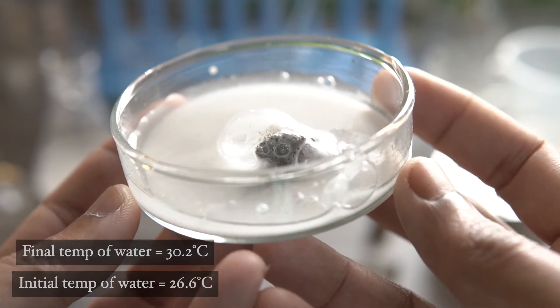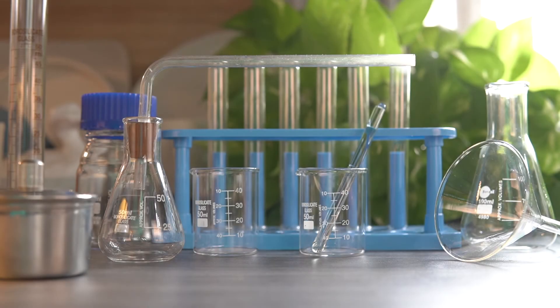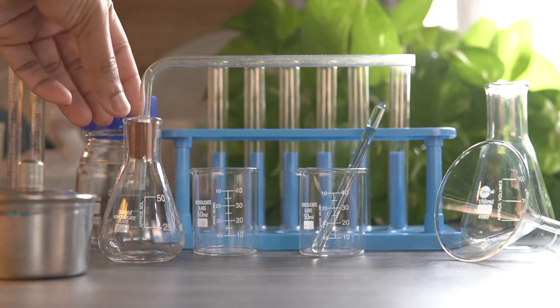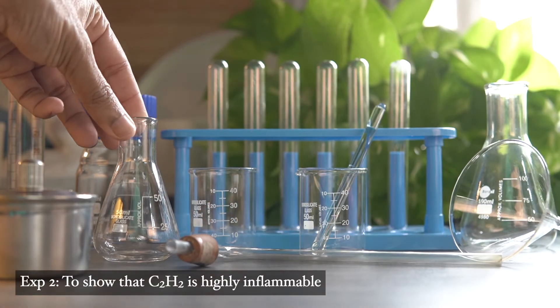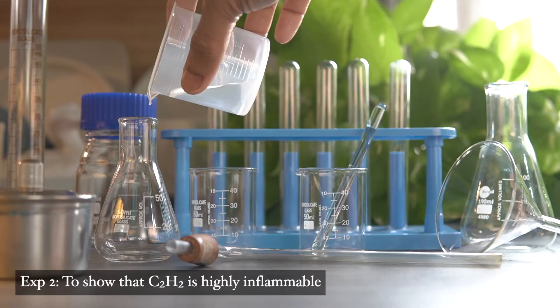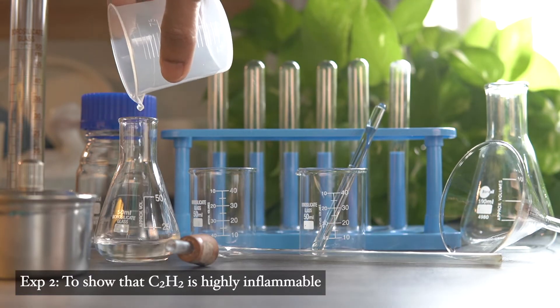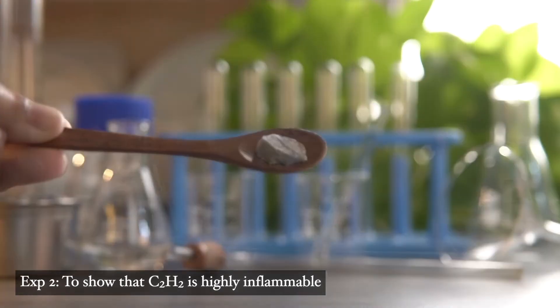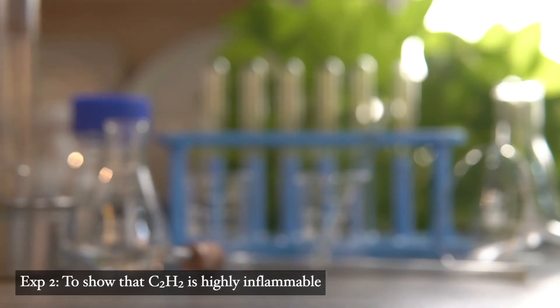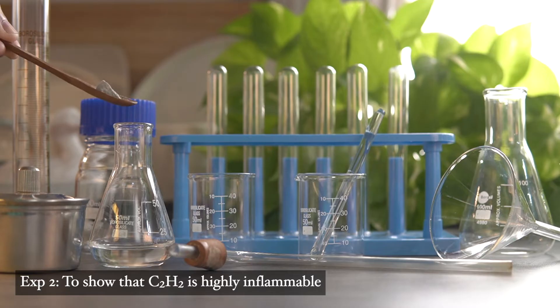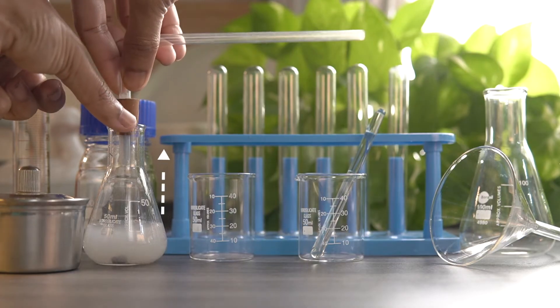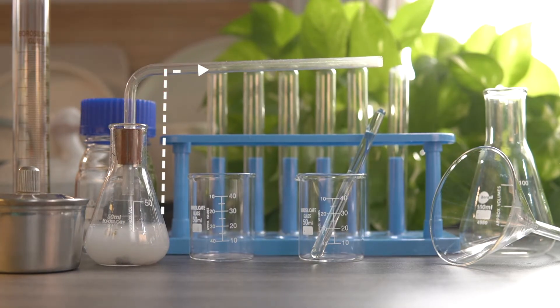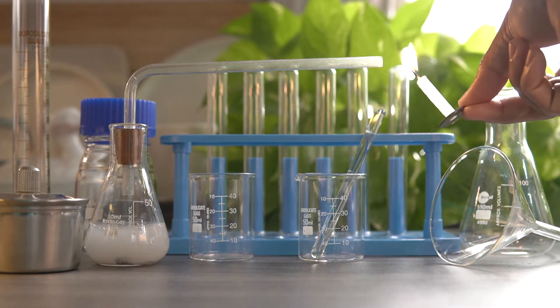To study the nature of the gas formed, we will take a conical flask fitted with a delivery tube. We will take some amount of water inside the conical flask. Now we will add a small piece of calcium carbide into the water and immediately close the open mouth of the conical flask with a delivery tube. We'll place a lighted candle at the open end of the delivery tube and immediately the gas catches fire.